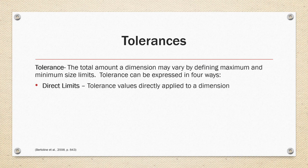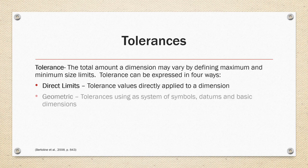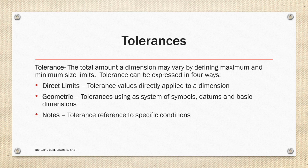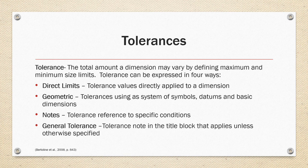Direct limits, that is, tolerance values directly applied to the dimension. Geometric, which is a tolerance using a system of symbols, datums, and basic dimensions. Notes to reference a specific condition. And general tolerance, which is a tolerance note in the title block that applies unless otherwise specified.